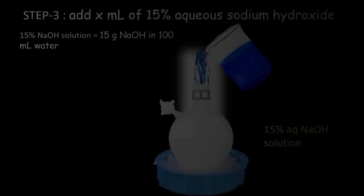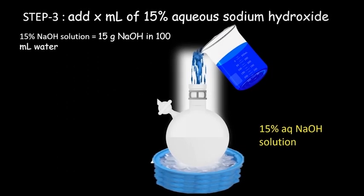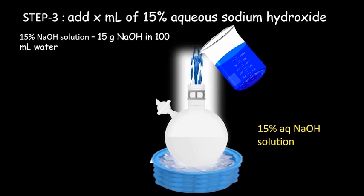Add x ml of 15% aqueous sodium hydroxide solution. That means add 15 grams sodium hydroxide in 100 ml water to make this 15% aqueous solution, and then from that solution take x ml, which is 1 ml in our case, and add it to the reaction mixture.